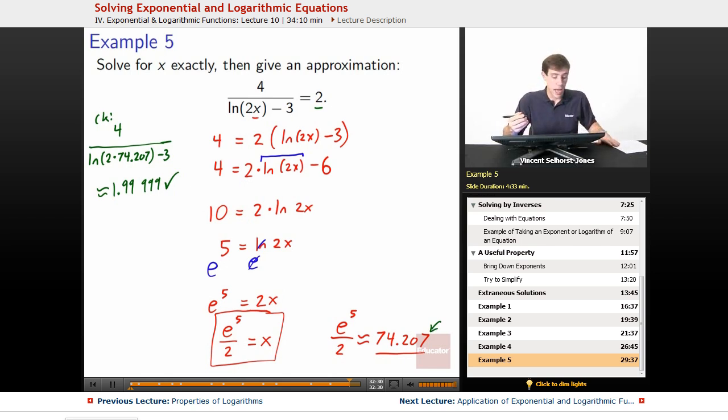If we wanted to, we could also work it out and show that it winds up being a precise answer as well, that e to the 5th over 2 is going to be equal to precisely what x has to be. We can check by plugging that in, 4 over the natural log of 2 times e to the 5th divided by 2 minus 3. So 2 times dividing by 2, they cancel out, so we've got 4 over the natural log of e to the 5th minus 3. We've got 4 over natural log of e to the 5th has to be 5,